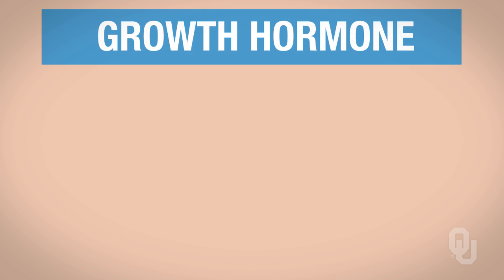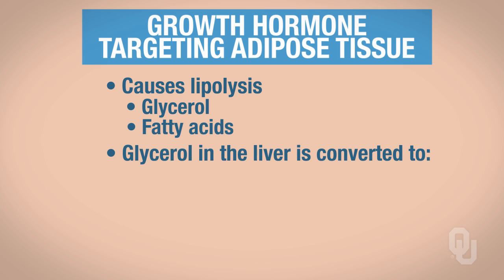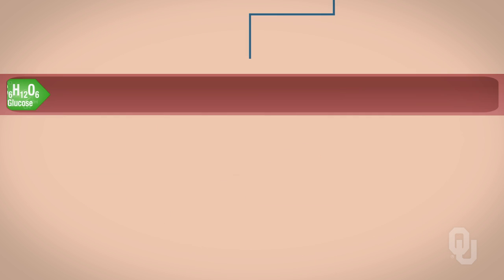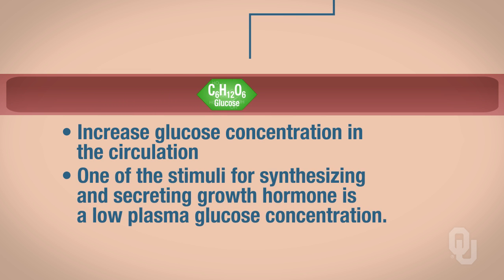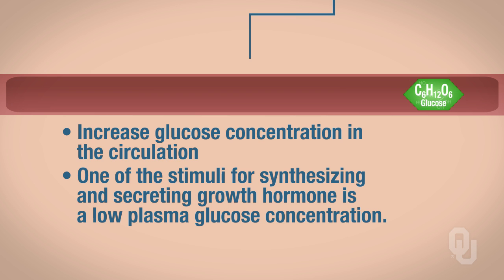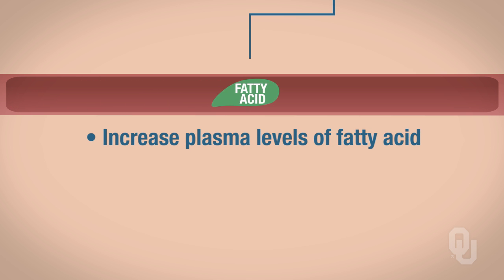Growth hormone also targets other tissues. When growth hormone targets adipose tissue, it causes lipolysis. The two products of lipolysis are glycerol and fatty acids. The glycerol can go into the liver and be converted to glucose, which then enters circulation, increasing plasma glucose concentration. Remember, one of the stimuli for secreting growth hormone was a low plasma glucose concentration, so here we've elevated it. The fatty acids also enter circulation, increasing plasma fatty acid levels.